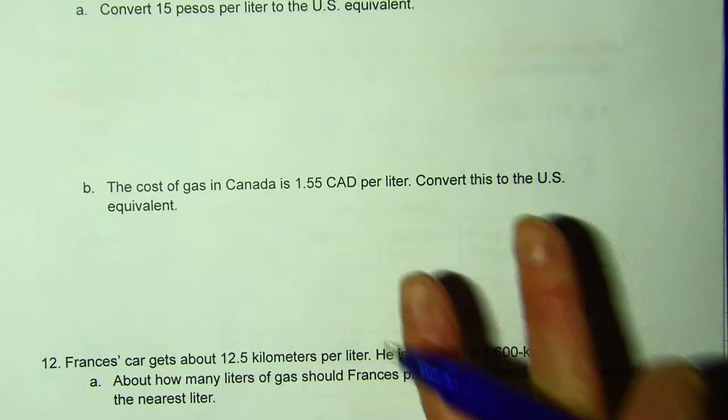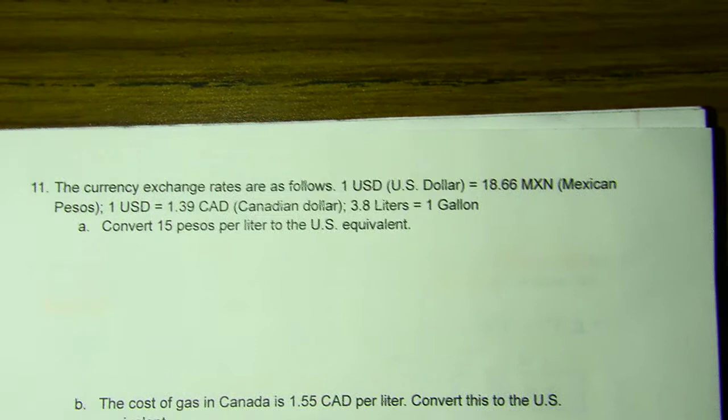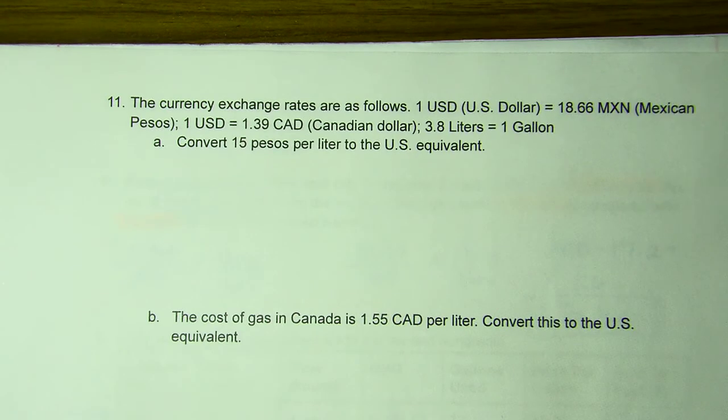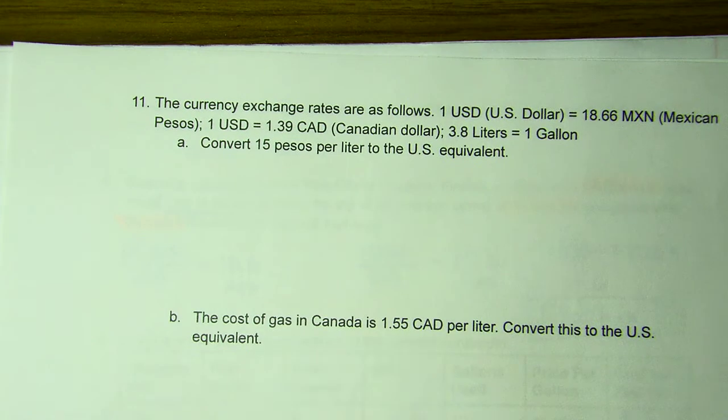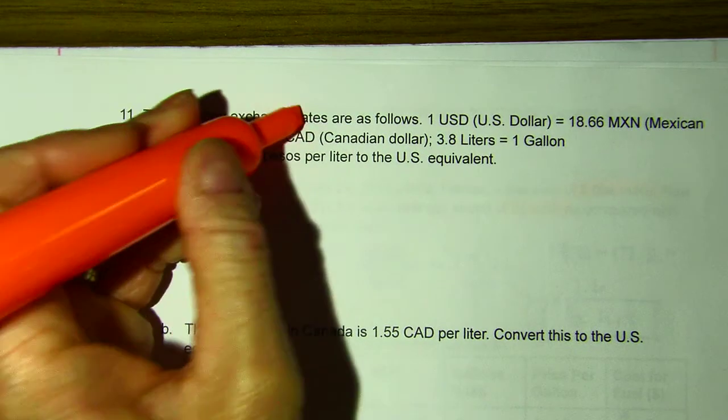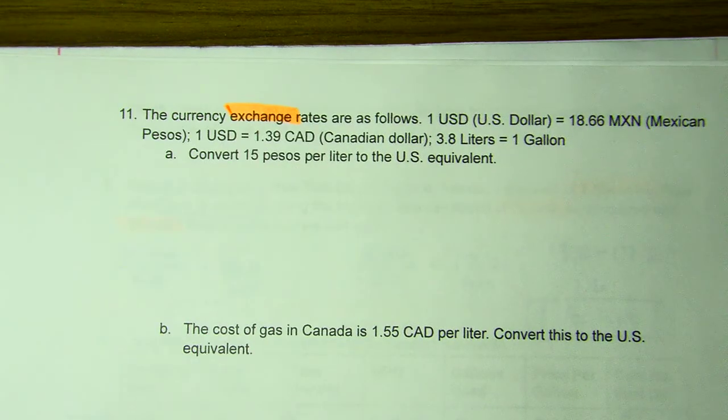The next one has to do with currency rates. So the U.S. dollar is worth different amounts compared to what the dollar is worth in Mexico or what the peso is worth in the United States. It's called a currency exchange rate. And it's the same when you go to any other country, not really states, but when you go to different countries, there's different money. It looks different. It has different value.